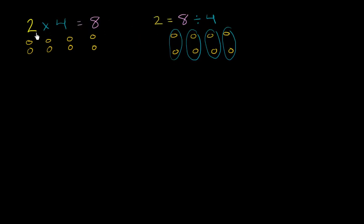So you probably see the relationship. 2 times 4 is 8. 8 divided by 4 is 2. And actually, if we did 8 divided by 2, we would get 4.